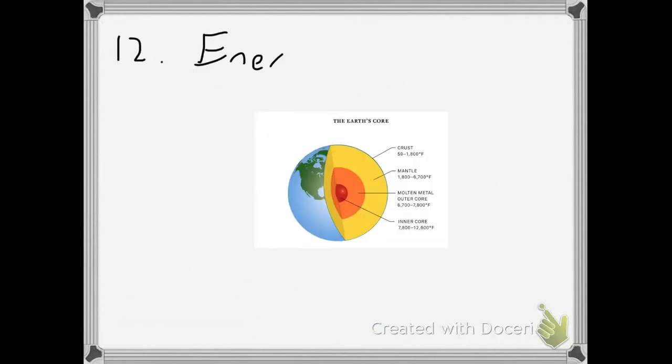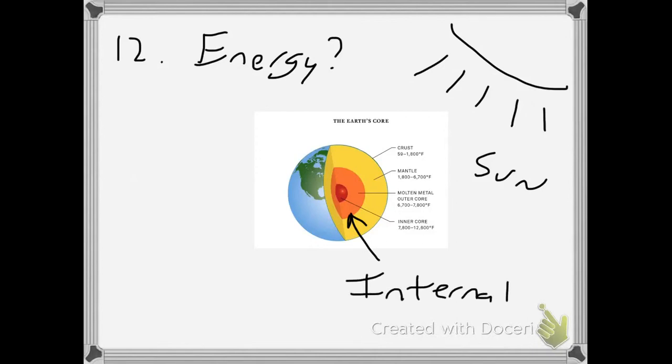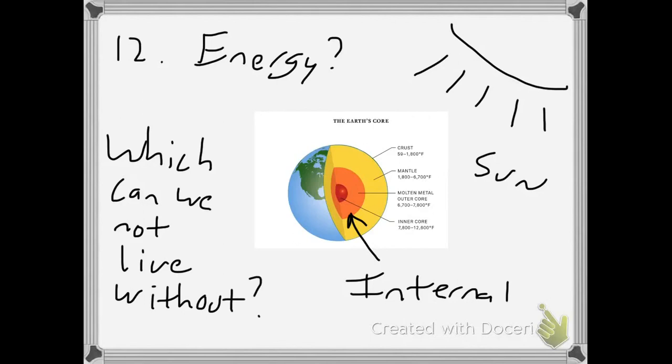Question number twelve: we take a look at a picture of this Earth and we want to determine where does the Earth get its forms of energy? So of course, one form of energy comes from the sun, which is an external energy source. We also have internal energy which comes from the Earth's core and mantle, which is molten hot liquid rock. The question I'm posing here is which can we not live without—can we go without the sun or can we go without the internal? Of course, the answer is we cannot live without the sun.